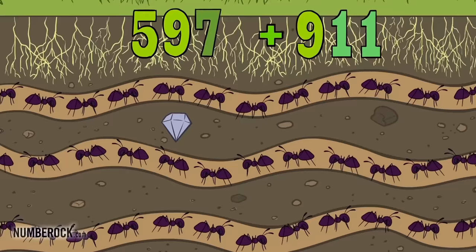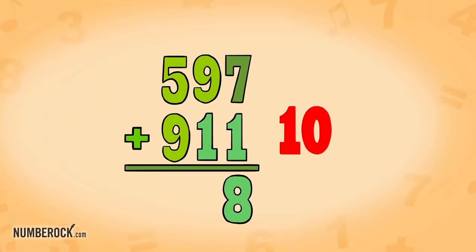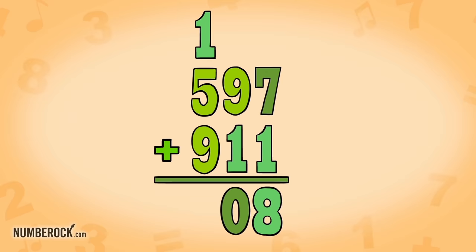597 ants above ground plus 911 ants underground. 7 plus 1 is 8, 9 plus 1 is 10. Each one of them is my special insect friend. Zero stays on the floor, the hundred heads next door. The summer's getting close,